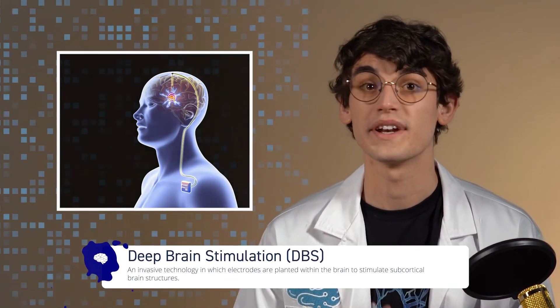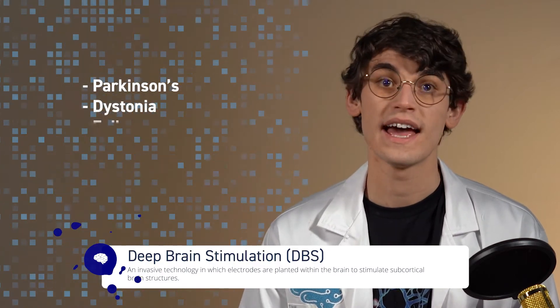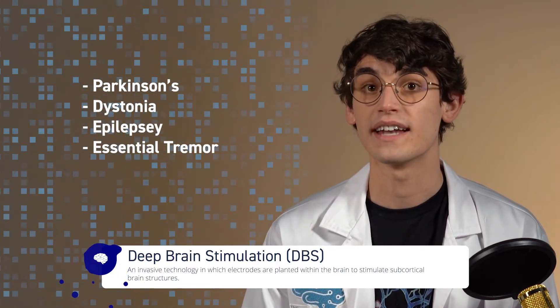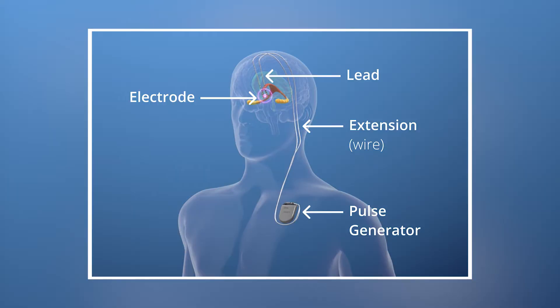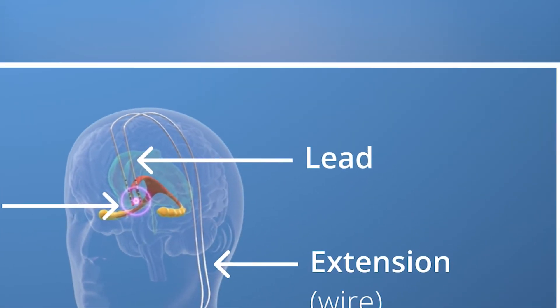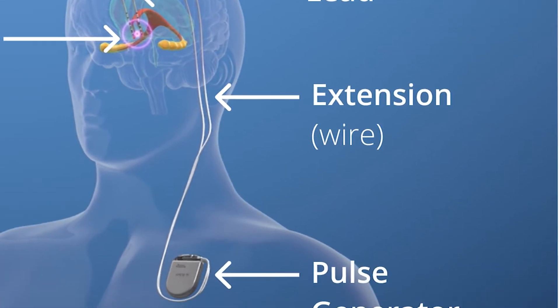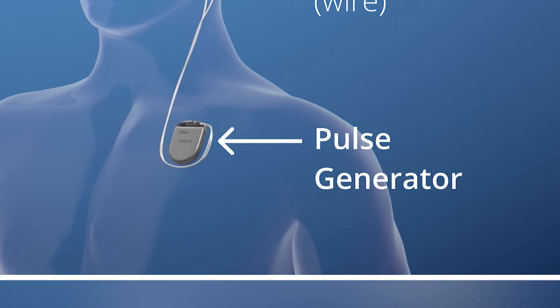DBS is commonly used for treating diseases such as Parkinson's, dystonia, epilepsy, essential tremor, and obsessive-compulsive disorder. DBS devices consist of an electrode, which is the point of stimulation; a lead, which is a rigid structure that is inserted into the brain; and an extension, which connects the lead to the pulse generator. The pulse generator sits outside the body over the pectoral muscle and can be programmed and charged externally.